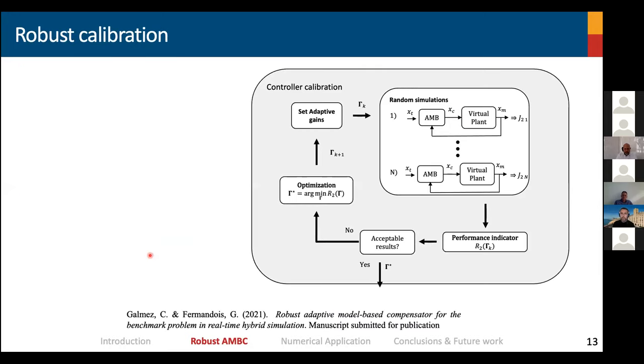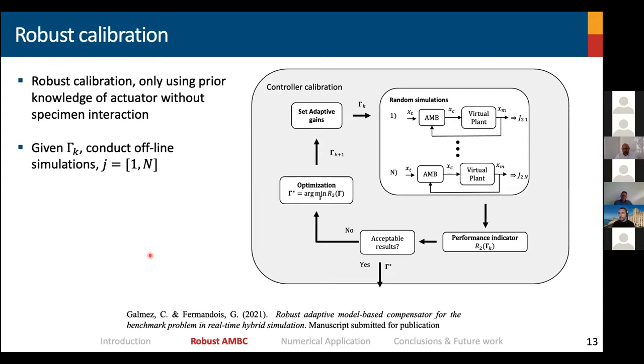So what we propose is the following. Conduct robust calibration or robust tuning of the adaptive controller using offline simulations before the test. The robust calibration only requires prior knowledge of the actuator without specimen. So there's no need to attach the specimen and conduct system identification with the specimen attached. We can have our bare actuators, conduct all the tests that we want on actuators, and we can design our controllers using that information.